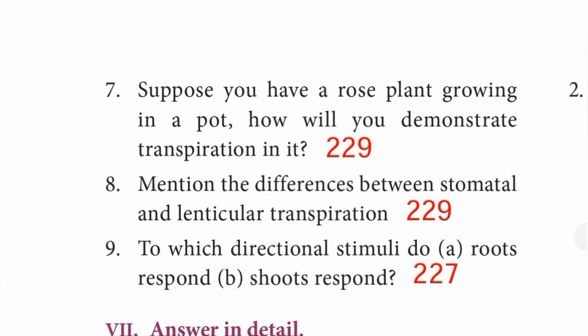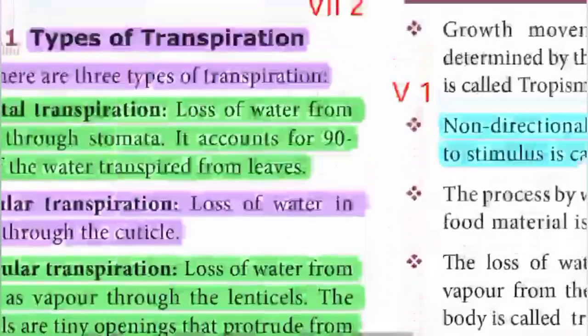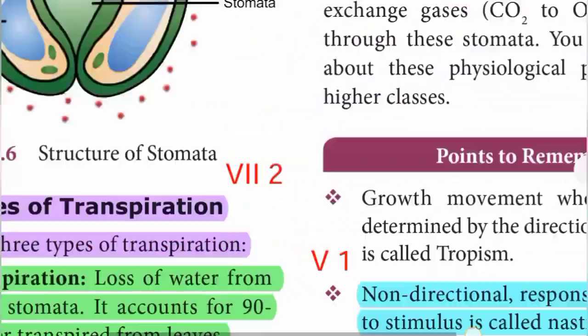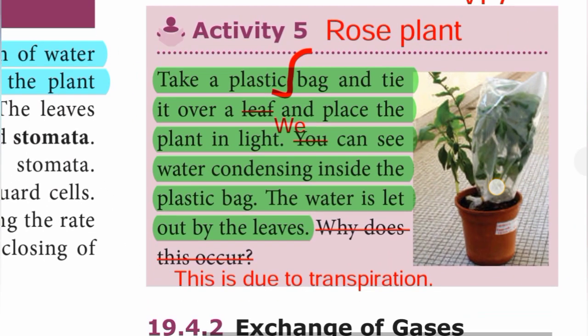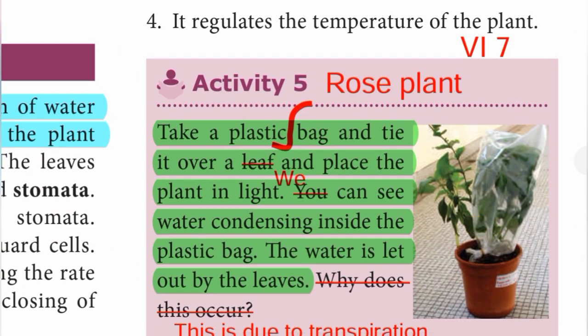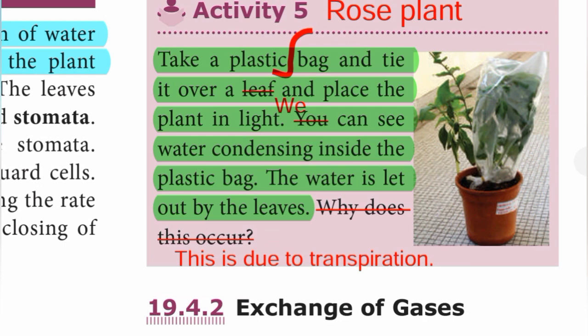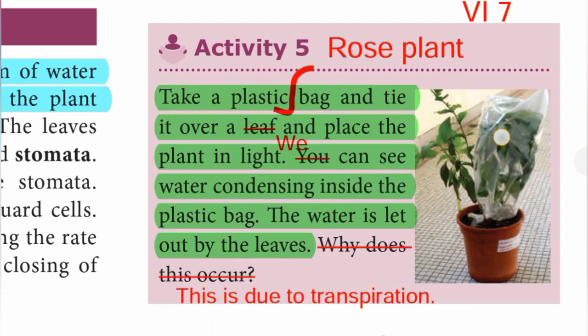Question seven: suppose you have a rose plant growing in a pot; how will you demonstrate transpiration in it? From page 229: take a plastic bag and tie it over a rose plant and place the plant in light. After some time we can see water condensing inside the plastic bag. The water is let out by the leaves. This is due to transpiration.